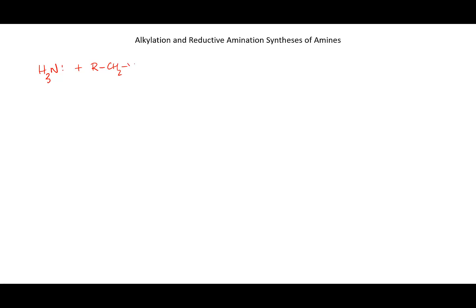The first way to synthesize an amine is alkylation. If I take ammonia and react it with a primary alkyl halide - remember going C, N, O, F across the periodic table, basicity increases right to left, and nucleophilicity increases too - nitrogen is a much stronger nucleophile than oxygen. Water or alcohol plus a primary alkyl halide was no reaction from our earlier chart, but an amine will react.